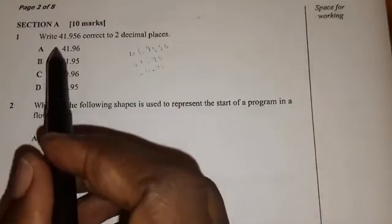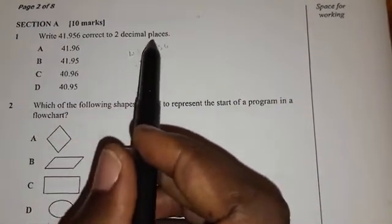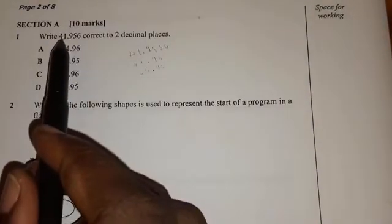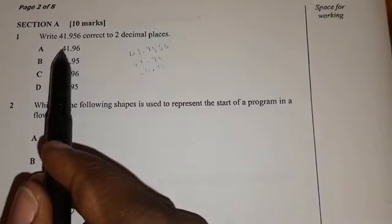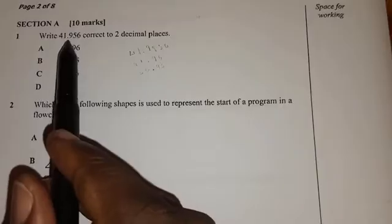In this video, we are going to focus mainly on section A. So the first question says, write this number correct to two decimal places. They want you to write this number here to two decimal places, so they want us to have two numbers after the decimal.